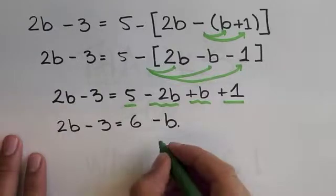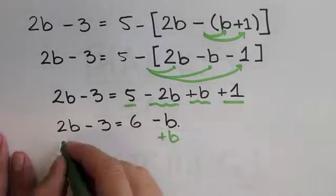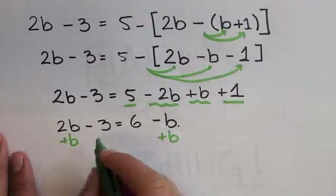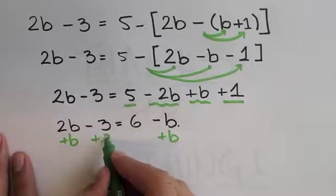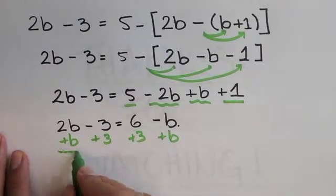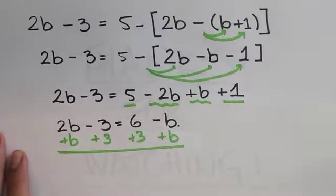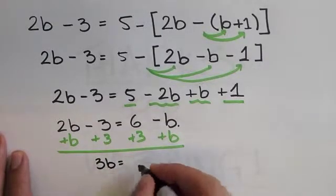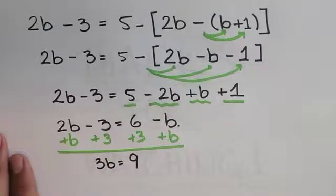Now, remember we want to move variables to the left side and numbers to the right side, adding 3 on both sides and adding b on both sides.